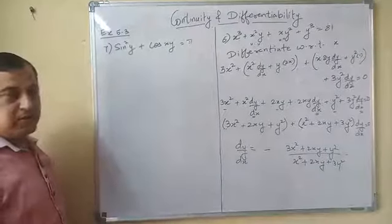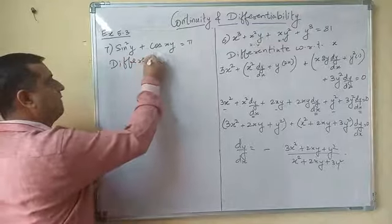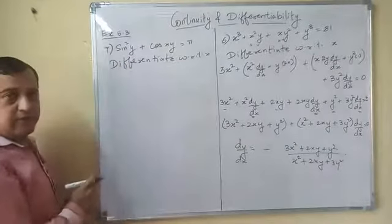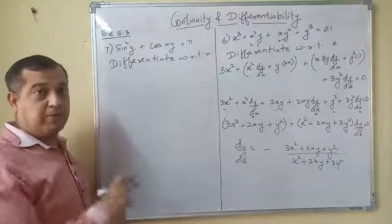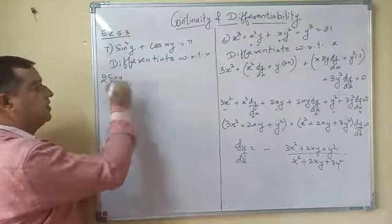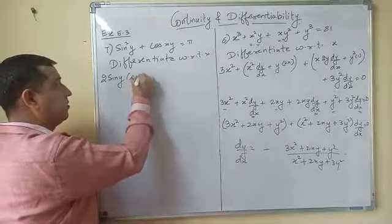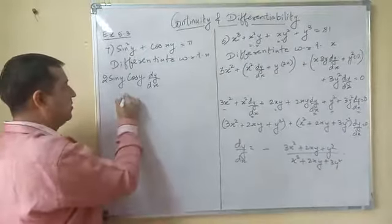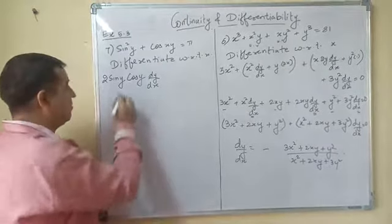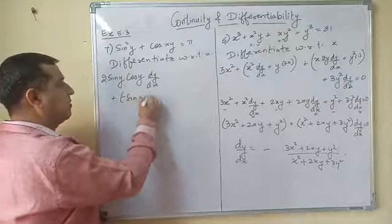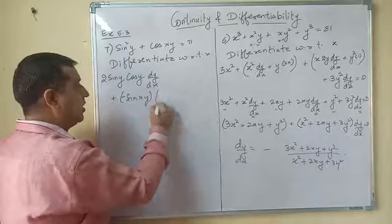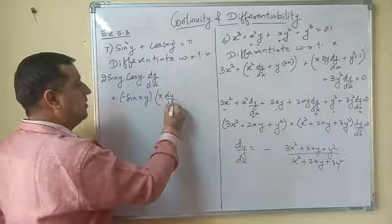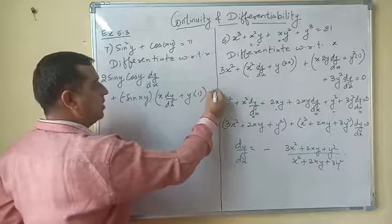Now for problem 7, differentiate sin²y + cos(xy) = π with respect to x. For sin²y: the power is 2, so by chain rule we get 2·sin(y)·cos(y)·(dy/dx). For cos(xy): the derivative is −sin(xy), and applying the product rule to xy gives x·(dy/dx) + y·1. The derivative of π is 0.